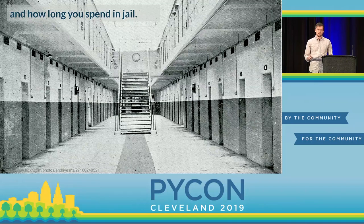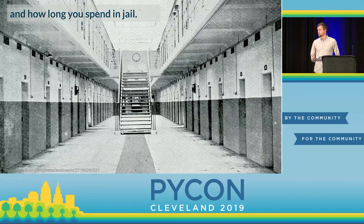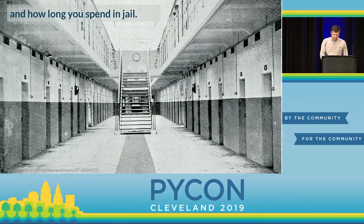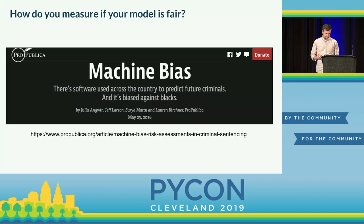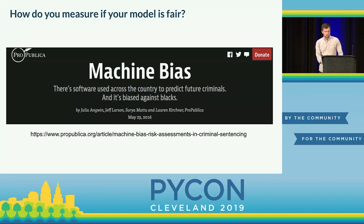Unfortunately, that's kind of where the consensus ends, because there are many different ways to define fairness and many different ways to measure the fairness of model predictions. This last example is actually a really illustrative case for that. How many of you have heard of the COMPAS recidivism model controversy? For those who are not familiar, there is a model called COMPAS which is used to predict recidivism — the likelihood that a person convicted of a crime will go on to re-offend when released.